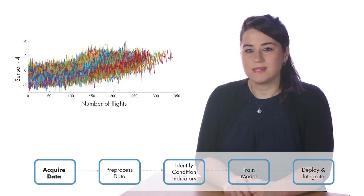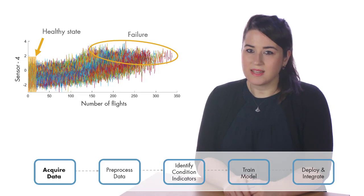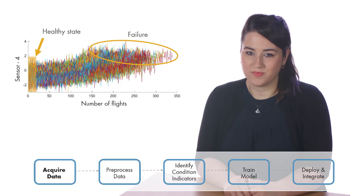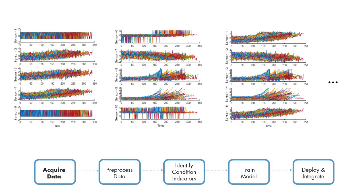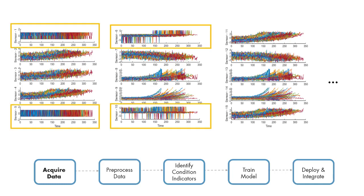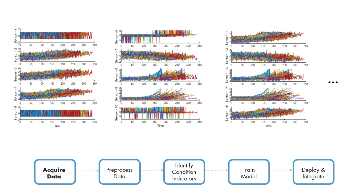Each engine starts in a healthy state and ends in failure. This data is from one of the sensors, but remember that we have 20 more sensors. So this is a large dataset. If we take a closer look at other sensor readings as well, we see that some of these measurements don't show a significantly changing trend between healthy state and failure. Therefore, they won't contribute to the selection of useful features for training a similarity model.